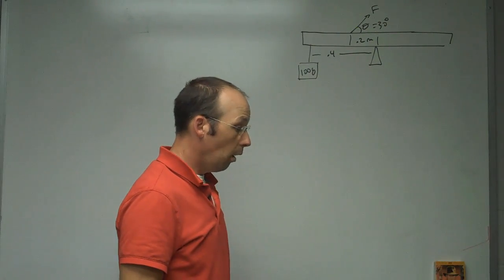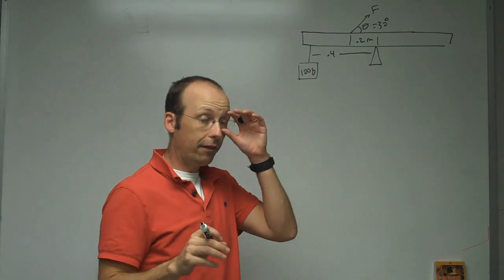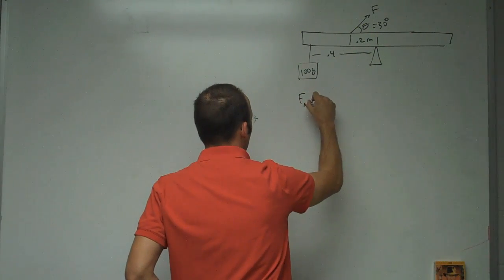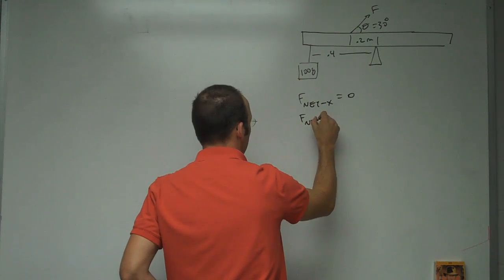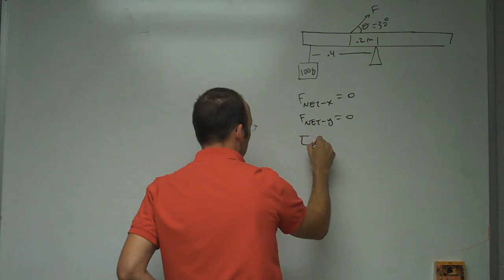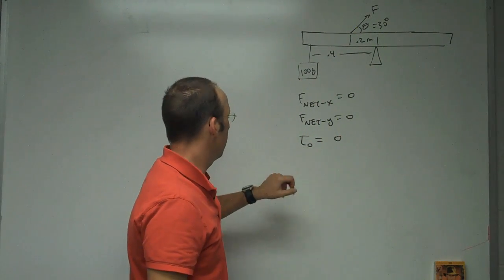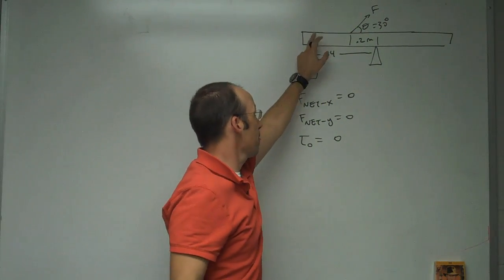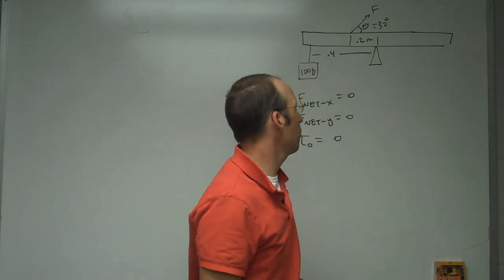Well, if the meter stick's in equilibrium, there are three things that have to be true. First, F net in the x direction is equal to zero. F net in the y direction is equal to zero. And the torque about some point has to be equal to zero. So what point? Well, if it's not rotating about this point, it's not rotating about this point. It's not rotating, so you can pick whatever point you want.